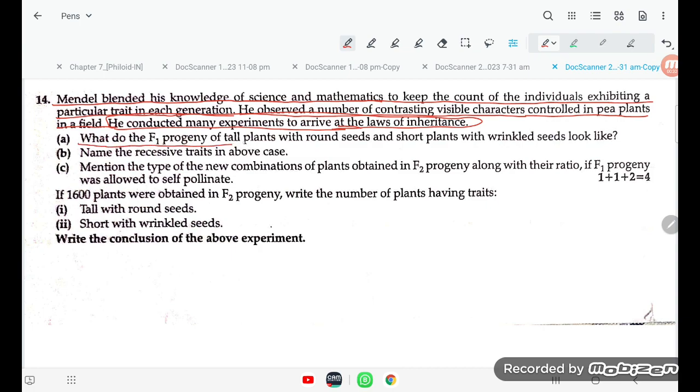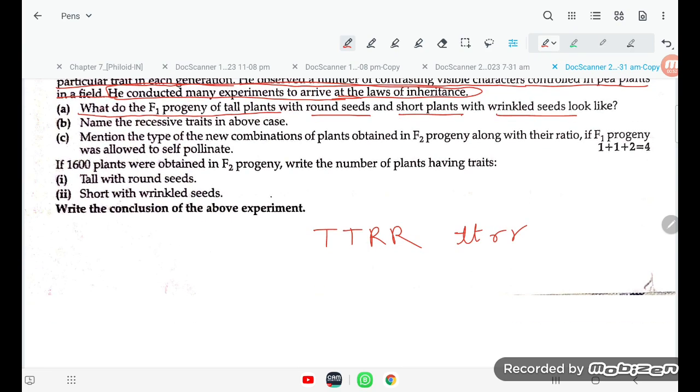What do the F1 progeny of tall plant with round seed and short plant with wrinkled seed look like? In F1 generation, it's going to be capital T, small t, capital R, small r. So it's going to be tall and round in F1 generation.